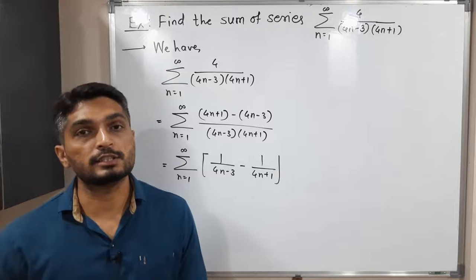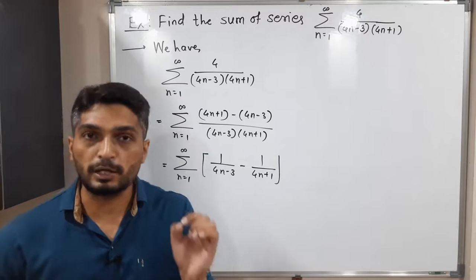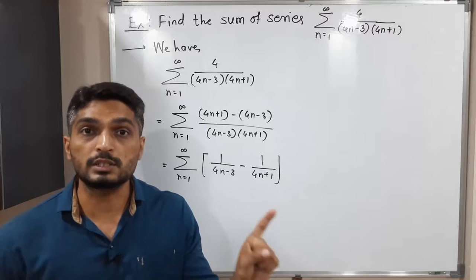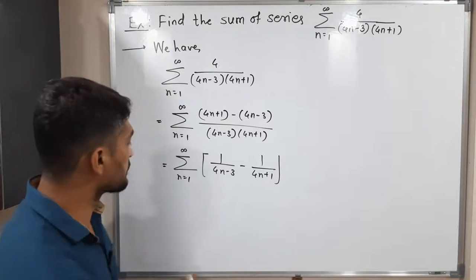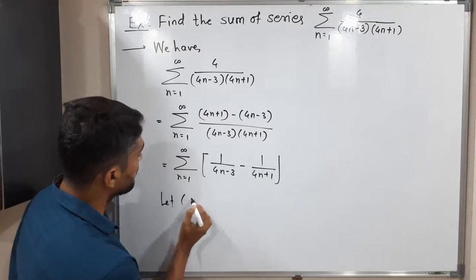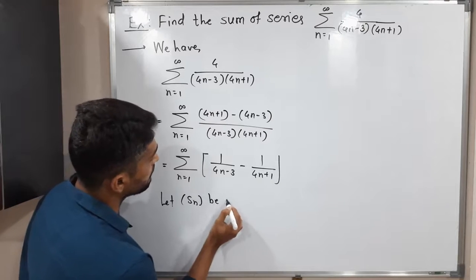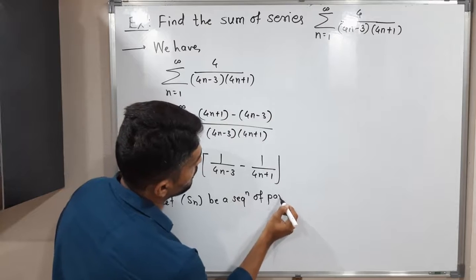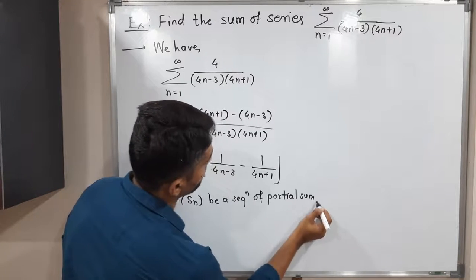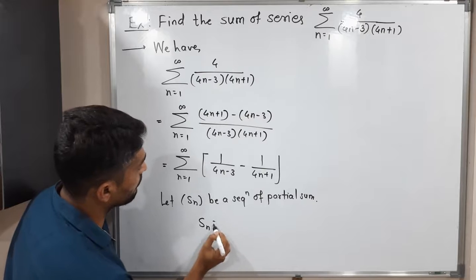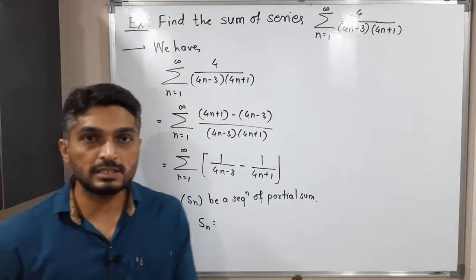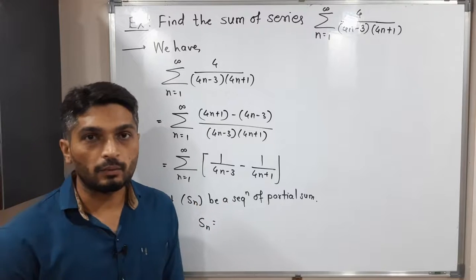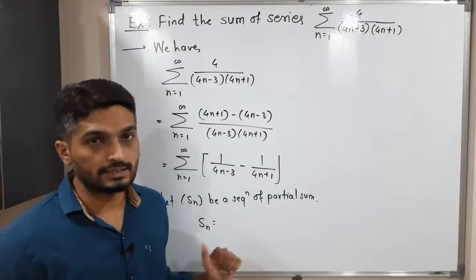To find the sum, I will consider the sequence of partial sums. Since we know that if the sequence of partial sums is convergent, then the series is also convergent and converges to the same point. Let sn be the sequence of partial sums — that means the sum of the first n terms. We are going to add the first n terms.